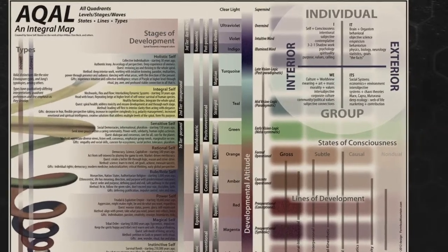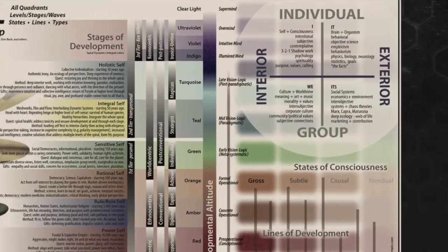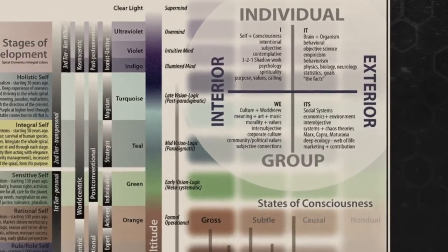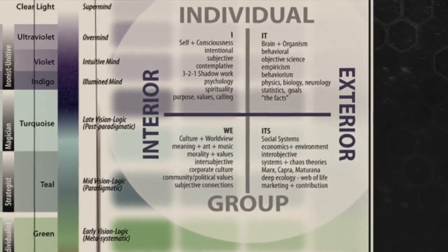In integral theory, one of our main lenses or tools for perspective taking are quadrants, but it really starts out with this understanding of interiors and exteriors. So we're doing both ontology and epistemology here. Ontology is what is it, and epistemology is how do you know. So we're talking about both what there is — the different aspects of reality — and how we know.